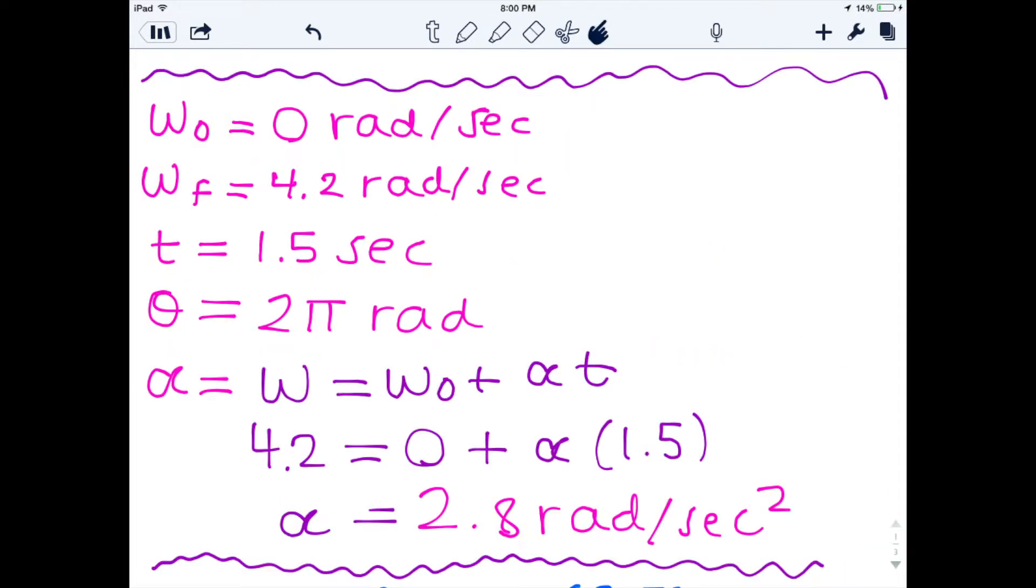Next, we're going to calculate the acceleration by plugging in the equations shown in purple, and we'll find alpha, acceleration to be 2.8 radians per second squared.